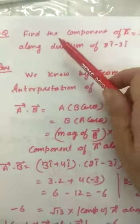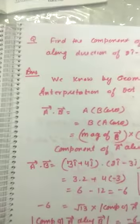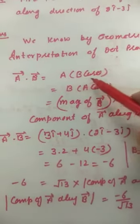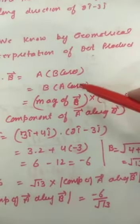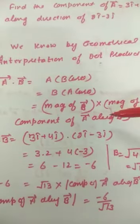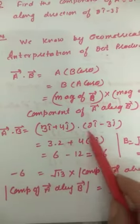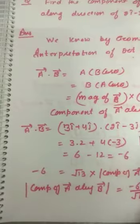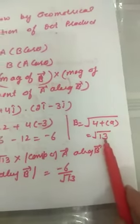Now another numerical: we have to find the component of vector a along the direction of vector b. By geometrical interpretation, vector a dot vector b equals b times a·cosθ, where b is the magnitude of vector b and a·cosθ is the magnitude of the component of vector a along b. We first find vector a dot vector b using ax·bx plus ay·by, and it comes out to be minus 6. Vector b is 2i cap minus 3j cap, so its magnitude is under root 13.